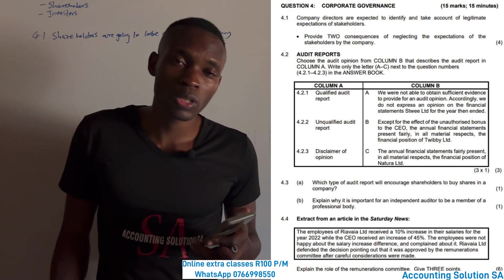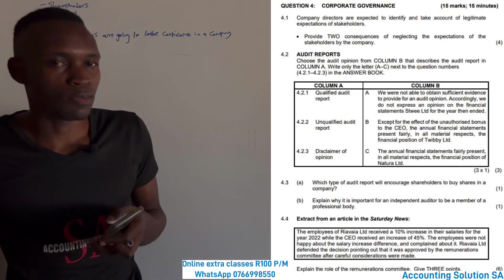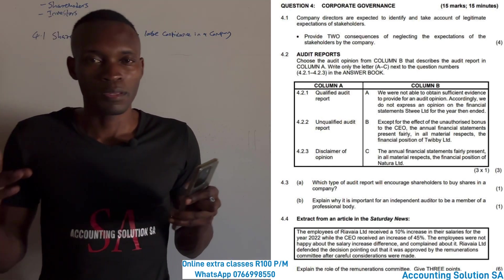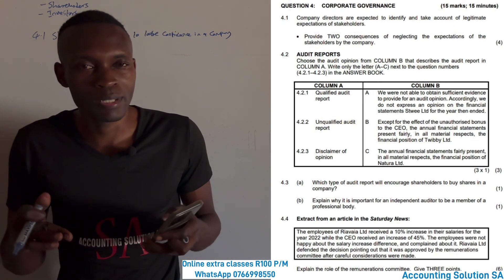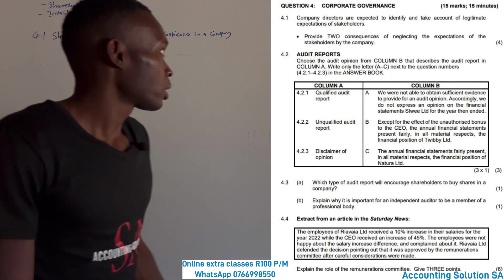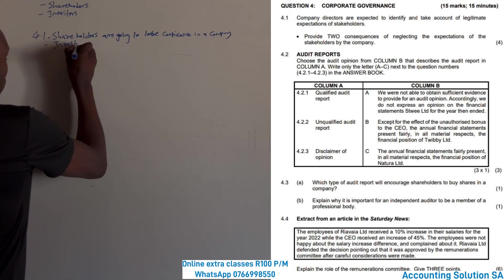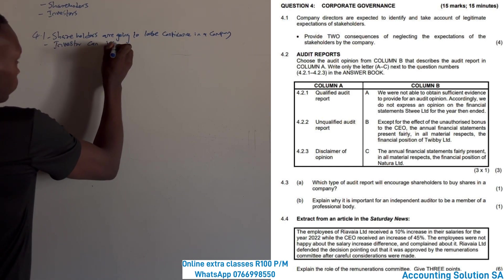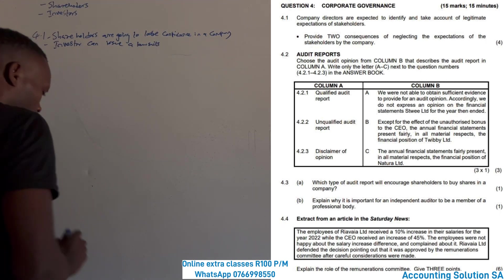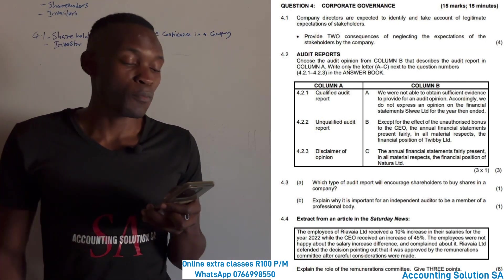Number two, this can cause a lawsuit. Imagine someone who just invested yesterday to become a shareholder, and they found that everything was misleading — the information provided was wrong. That investor can issue a lawsuit. It was four marks, which means we must list two consequences, two marks each. Moving to 4.2, which is also a very important question.